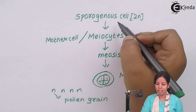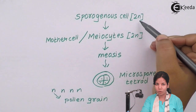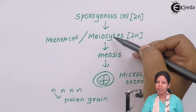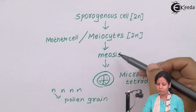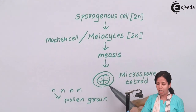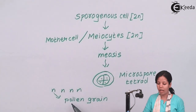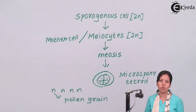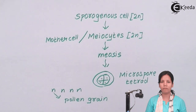The journey of the pollen grain starts from sporogeneous cells. Sporogeneous cells are diploid and differentiate to form meocytes (mother cells), which are also diploid. Meocytes undergo meiosis to form four haploid microspore tetrads. One of these haploid tetrads forms the pollen grain, which is the male gametophyte. In this part of the chapter, we studied how pollen grains are formed through microsporogenesis and how differentiation takes place.